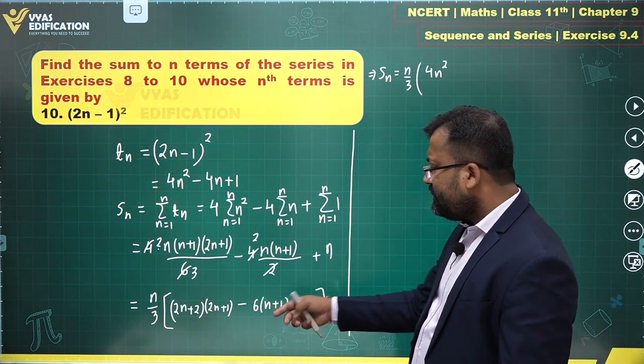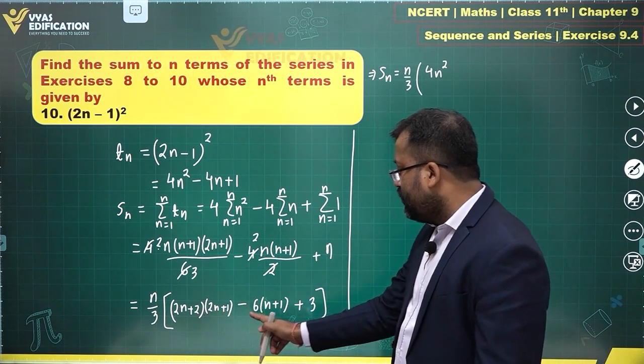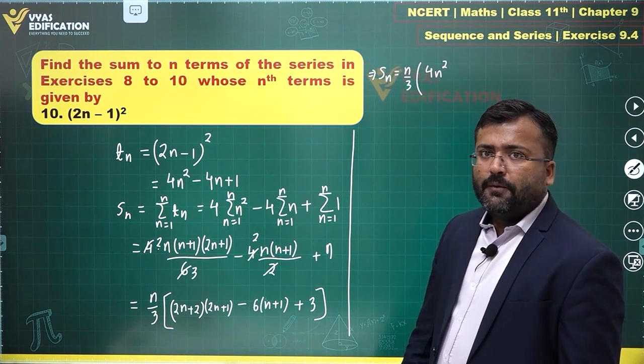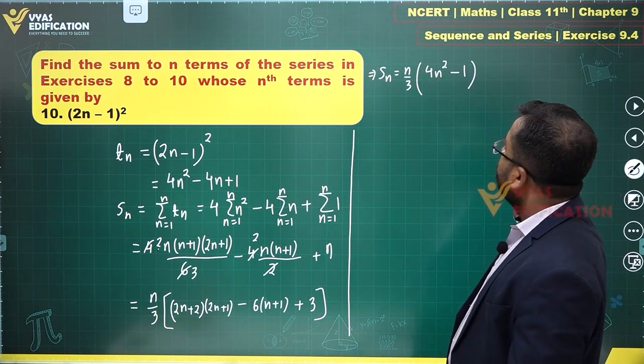6n minus 6n gets canceled. For the constant: 2 plus 3 is 5, minus 6, so 5 minus 6 is minus 1, and this is what you get.